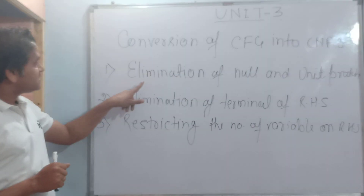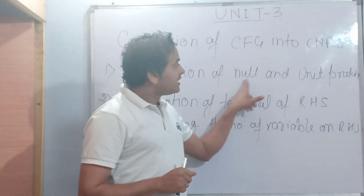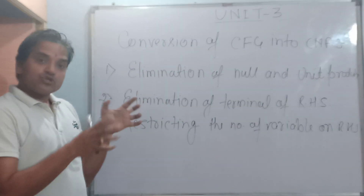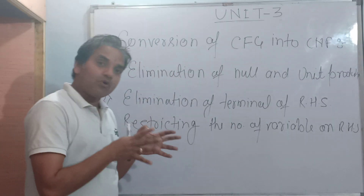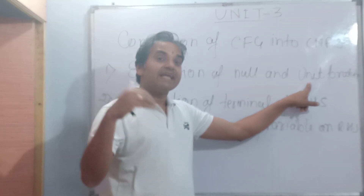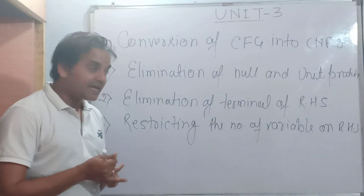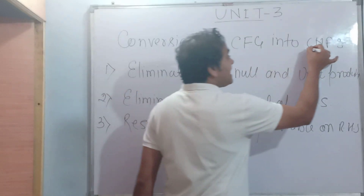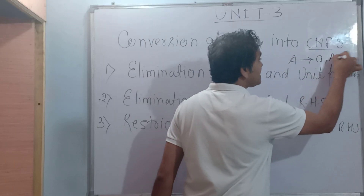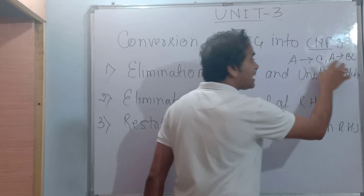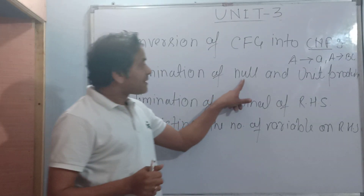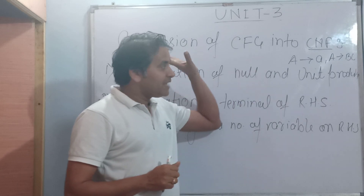The first step is to eliminate null and unit productions. Because in CNF, we have productions of the form A → BC or A → a. This means null productions are not allowed. If you have a null production, it will be eliminated. If there is a null or unit production, it must be removed so that productions conform to the CNF form A → BC.